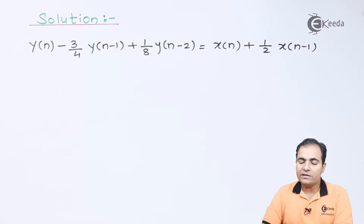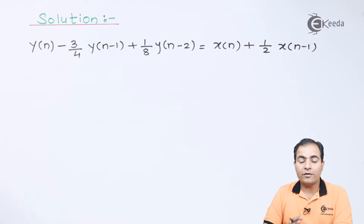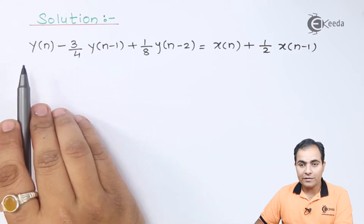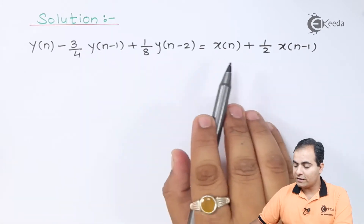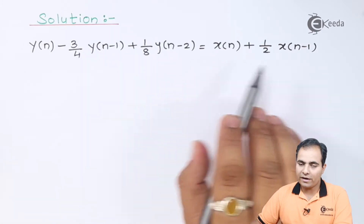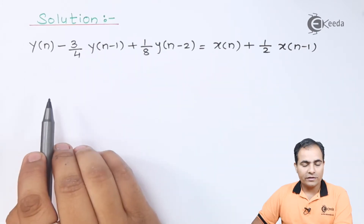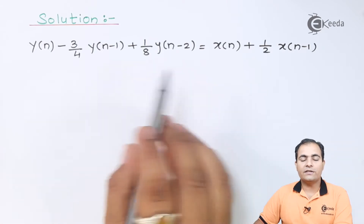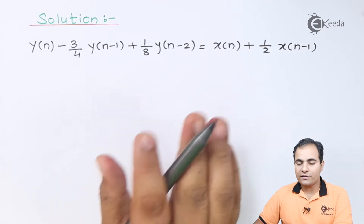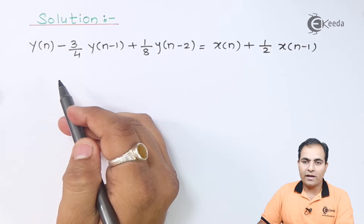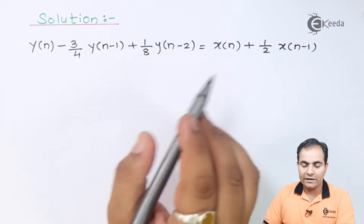The transfer function is nothing but the ratio of the Z transform of the output to the Z transform of the input. We take Y(z) common from the left-hand side and X(z) common from the right-hand side. Once we get the ratio of Y(z) to X(z), the right-hand side equation gives us the transfer function of the system. So we apply Z transform on both sides.